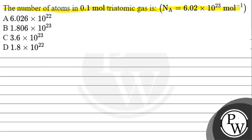Avogadro's number value is given as 6.02 into 10 raised to the power 23 mole inverse. Option A is 6.026 into 10 raised to the power 22. Option B is 1.806 into 10 raised to the power 23. Option C is 3.6 into 10 raised to the power 23. Option D is 1.8 into 10 raised to the power 22.